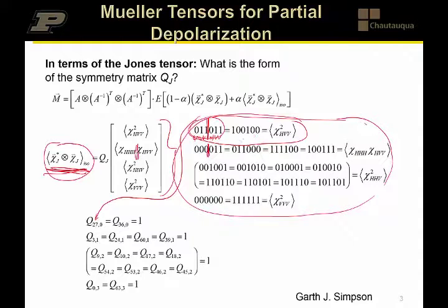And similarly, the 1, 0, 0, 1, 0, 0 corresponds to the binary number, corresponds to the decimal number of 36. So we can take advantage of the decimal of the tensor orderings, the index orderings, to tell us the decimal location inside that symmetry matrix of the Jones transformation. So it's very easy to populate Q sub J based on knowledge of these four unique tensor elements.